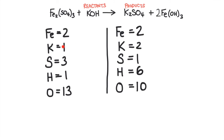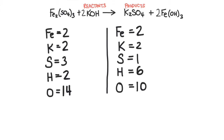We can move on to the other metal on this equation, which is potassium. There's only one potassium on this side, but there are two potassiums on the other side. I'll change this coefficient to two. That now gives us two potassium atoms, two hydrogen atoms, and two oxygen atoms here, plus the 12 oxygen atoms over here for a total of 14 oxygen atoms.